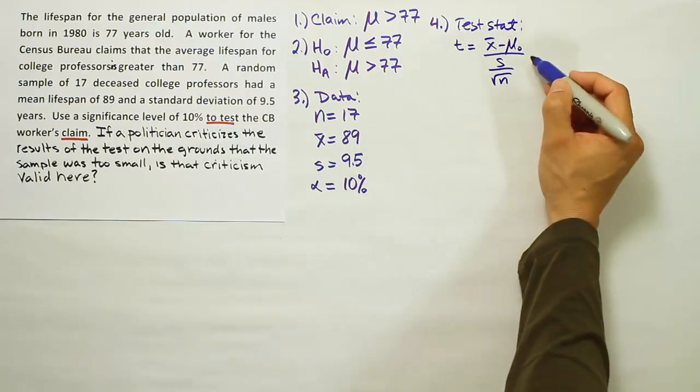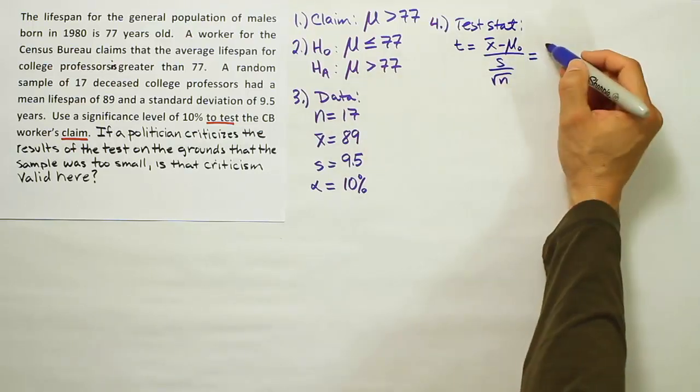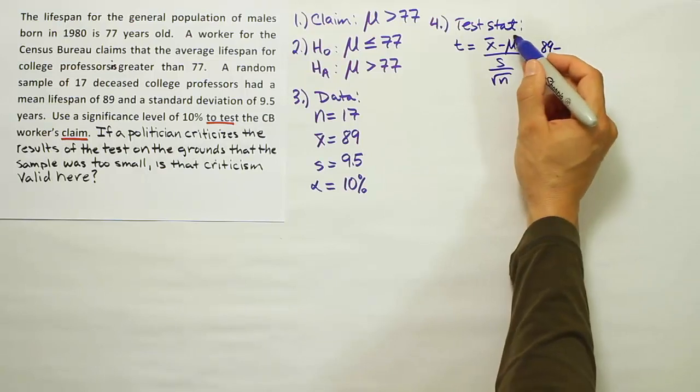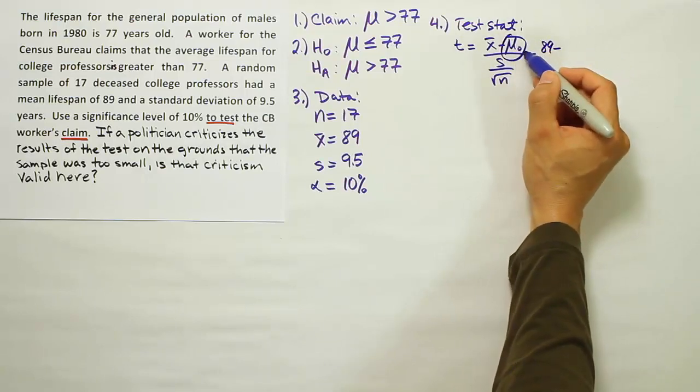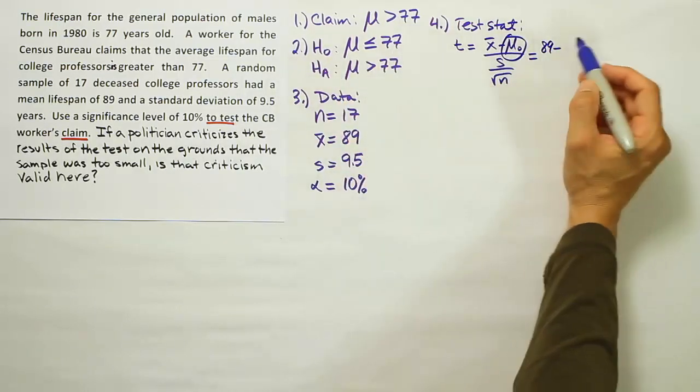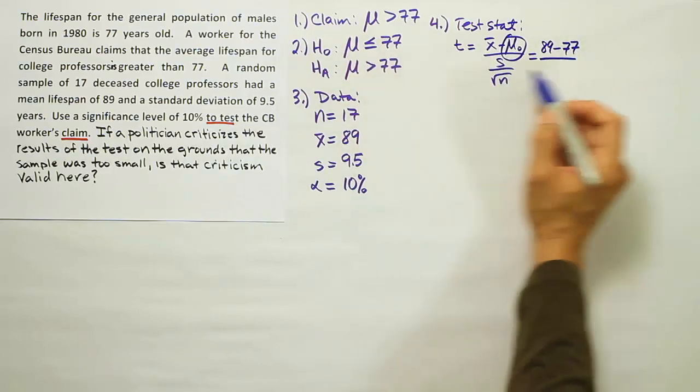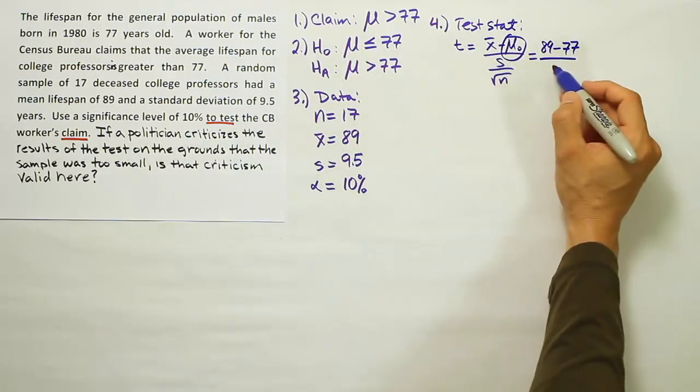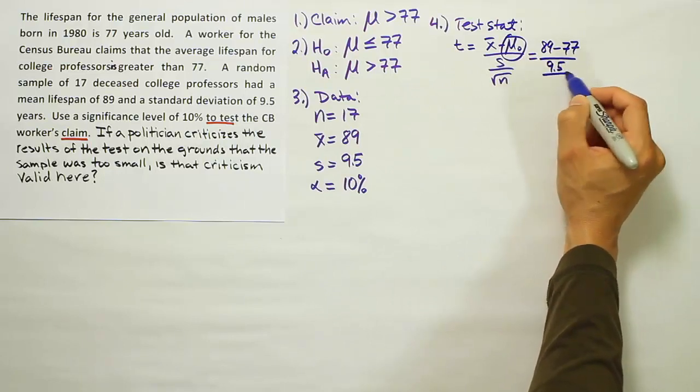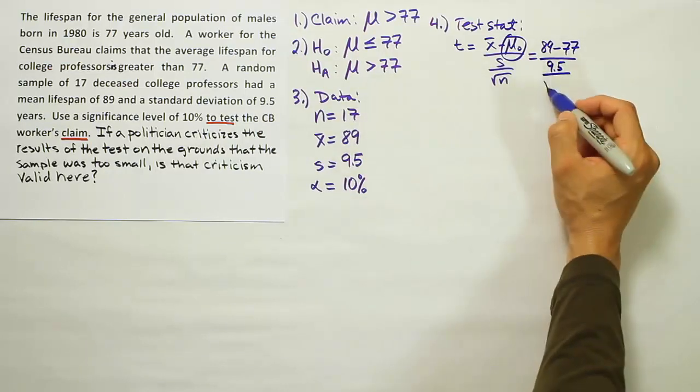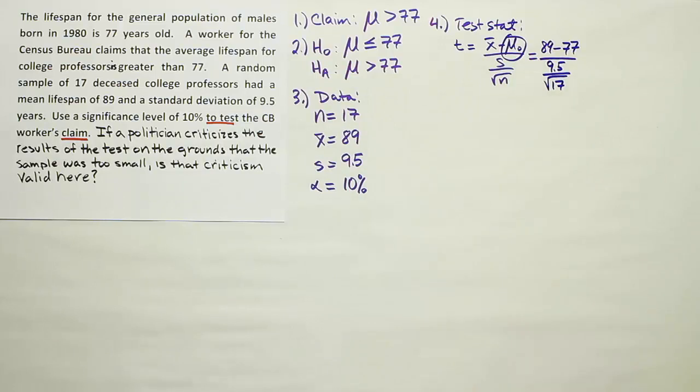Now that we have that, we're just going to plug in the numbers. X̄ is 89 minus this number, the μ₀ that comes from H0, that's going to be 77. The number we get from H0's claim. Then S is 9.5. And then we plug in the square root of n, which is the square root of 17 here.